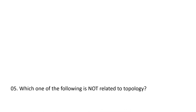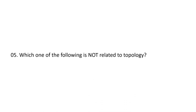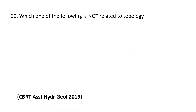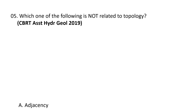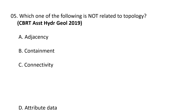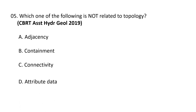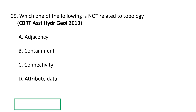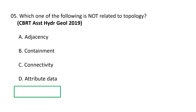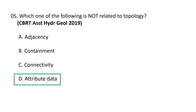Next question: which one of the following is not related to topology? A) Adjacency, B) Containment, C) Connectivity, and D) Attribute data. Attribute data is not related to topology. D is the correct option.